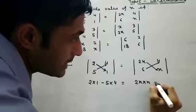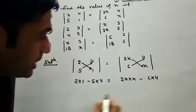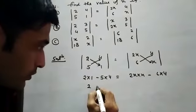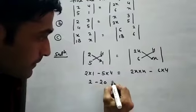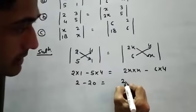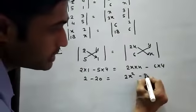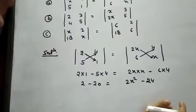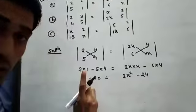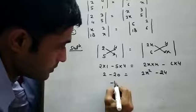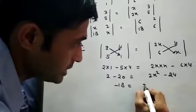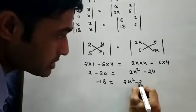2 times x minus 6 times 4. 2 times 2 times 4 equals. Now student look here. 2 is positive, 20 is negative. So answer is minus 18.